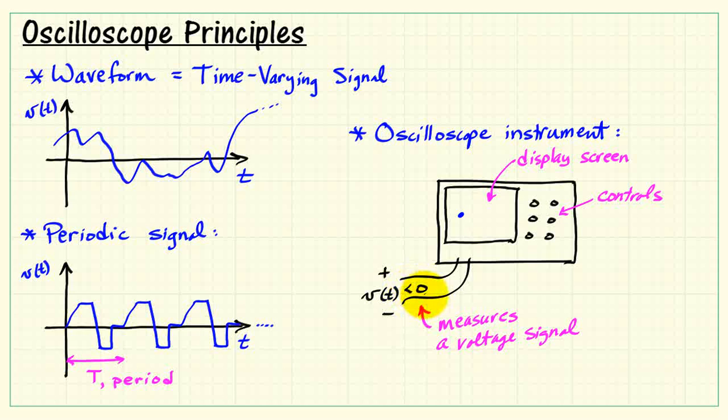When the voltage is less than zero, the spot drops lower. Essentially, the vertical displacement of that spot is proportional to the voltage. So up and down tells us the voltage value.